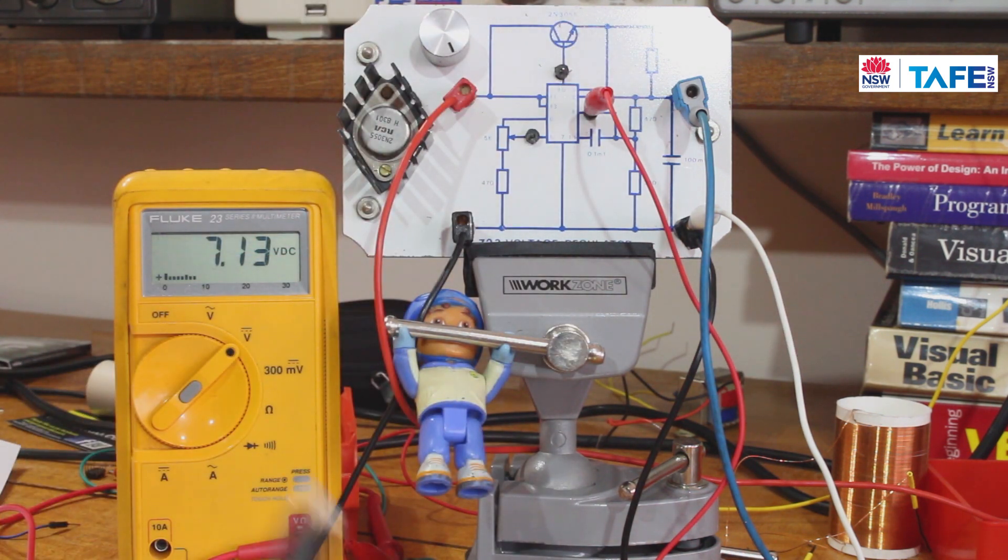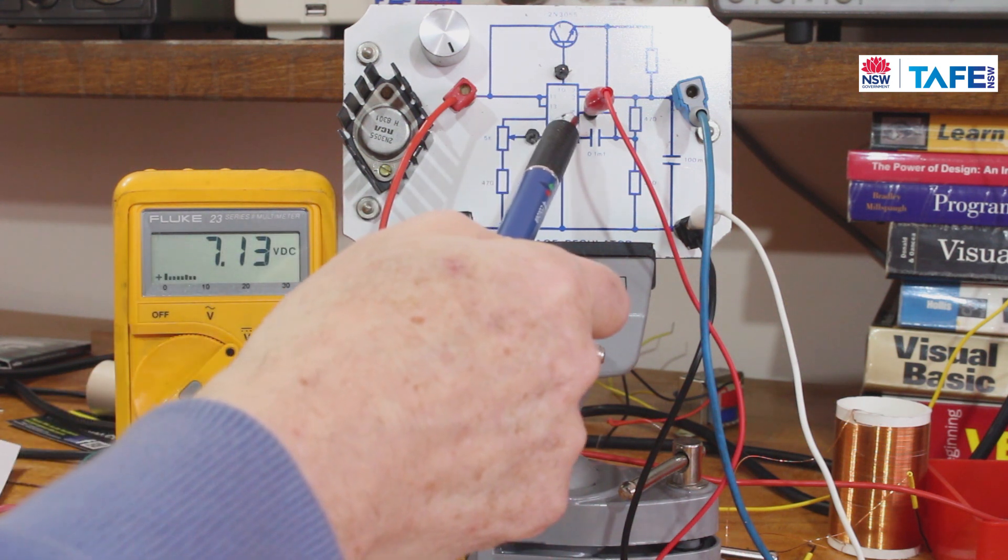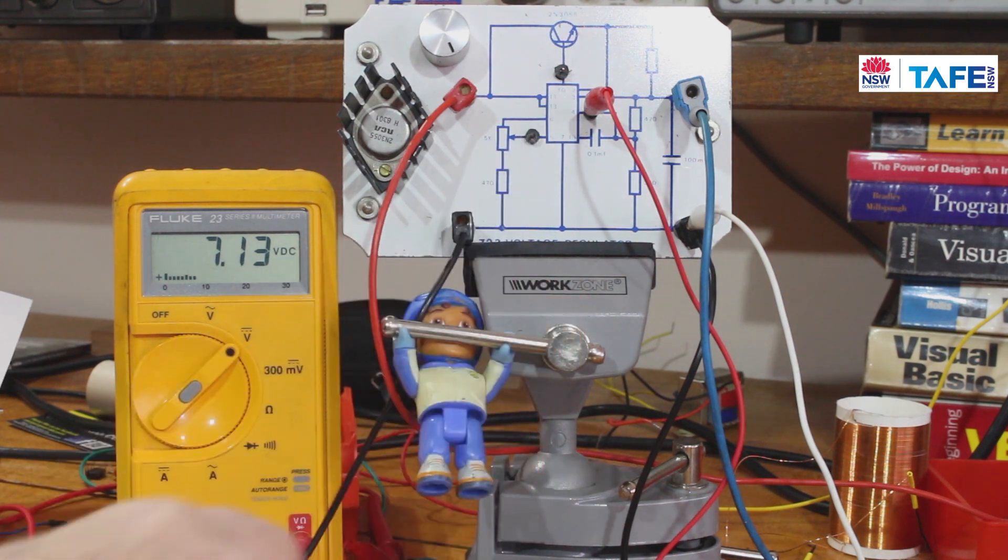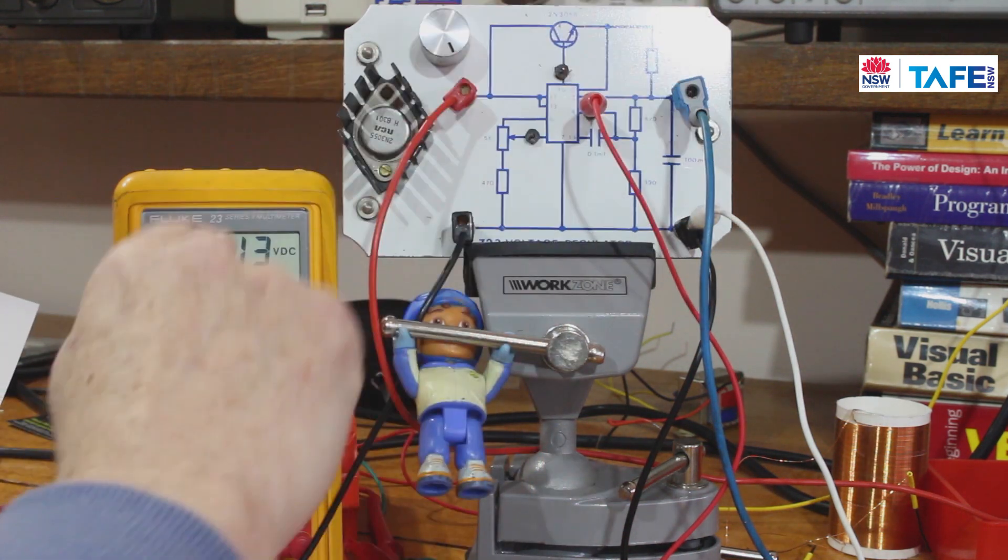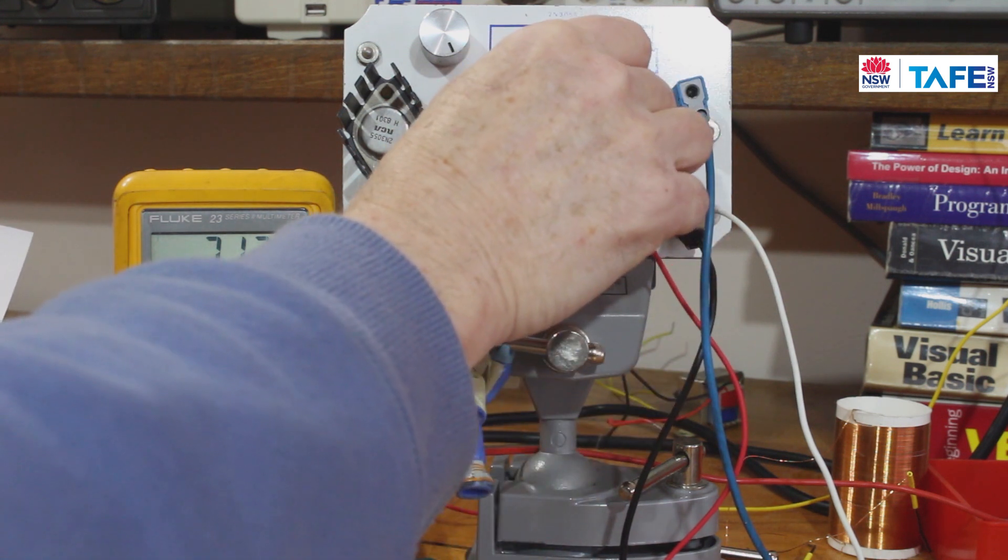I've actually got the meter at the moment already hooked up to pin 4, and pin 4 is the inverting input. Pin 5 is the non-inverting. Let's take it over: 7.13 volts on the inverting input.